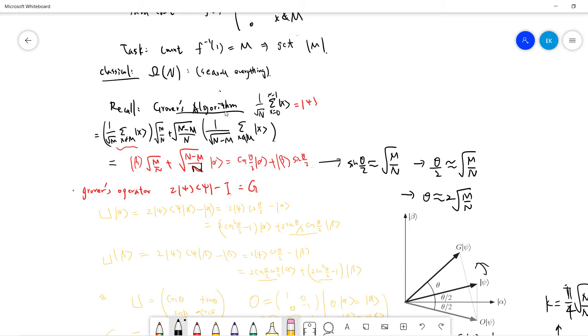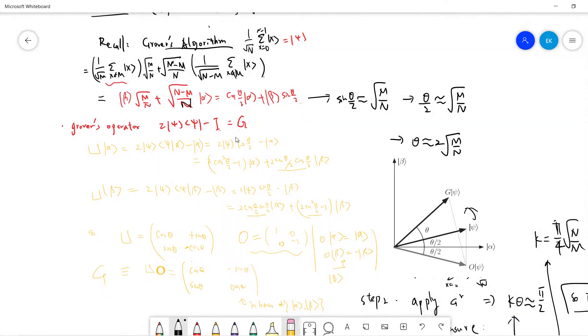Because the idea in Grover's algorithm is that we first produce the linear superposition, and then we can write this superposition as these two sums. One is sqrt((N-M)/N)|α⟩ and the other sum over M. We can assume that M is somehow small. So sin(θ/2) ≈ sqrt(M/N), so θ ≈ 2*sqrt(M/N).